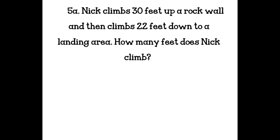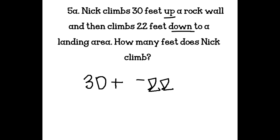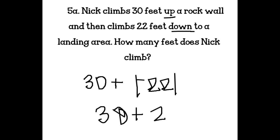5A — Nick climbs 30 feet up a rock wall, then climbs 22 feet down to a landing area. How many feet does Nick climb in total? He climbed up 30 feet — that's positive 30 — plus he climbed a total of 22 feet down. We take the absolute value of that, so 30 plus 22 equals 52 feet.